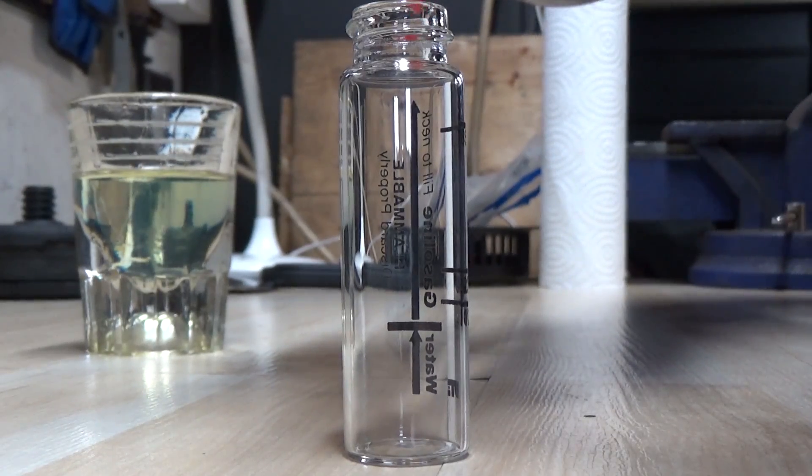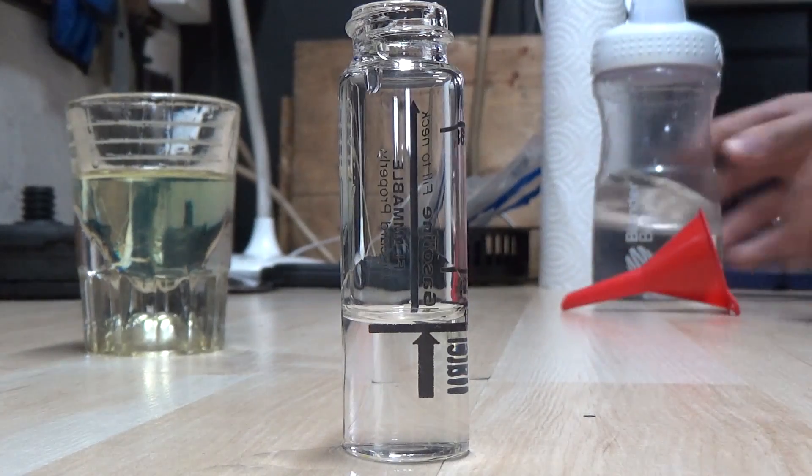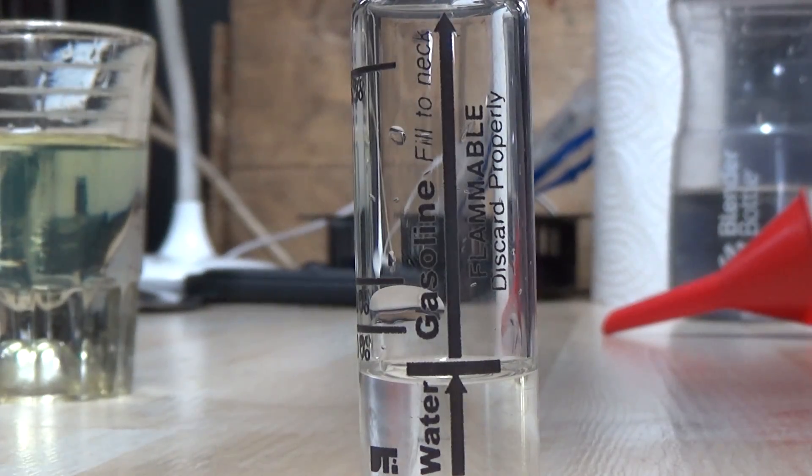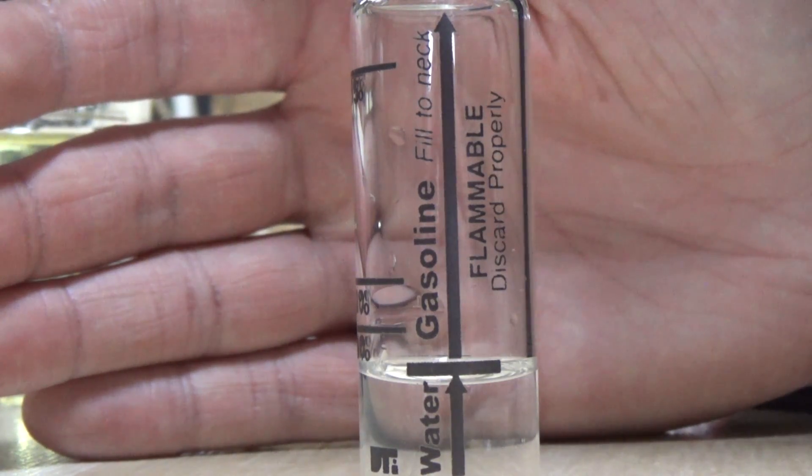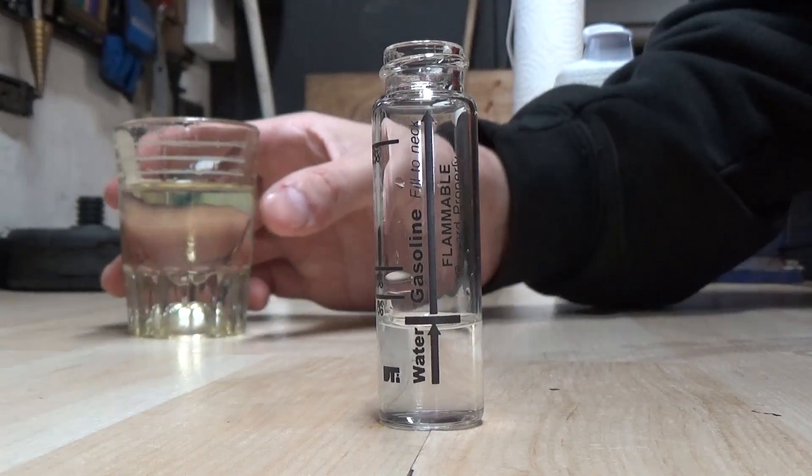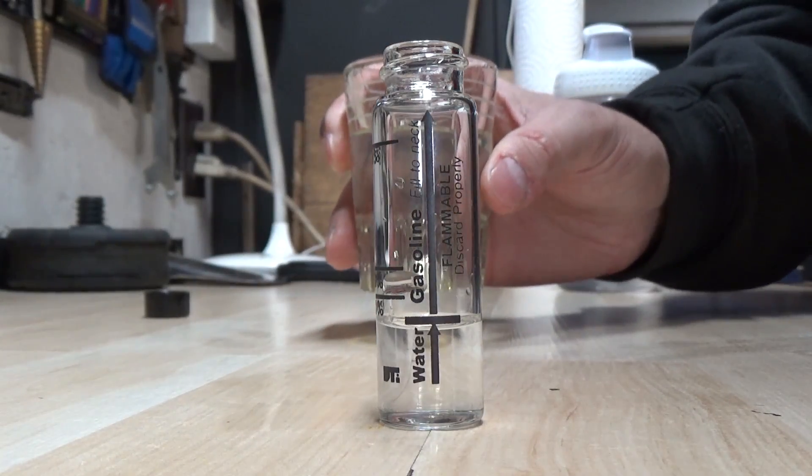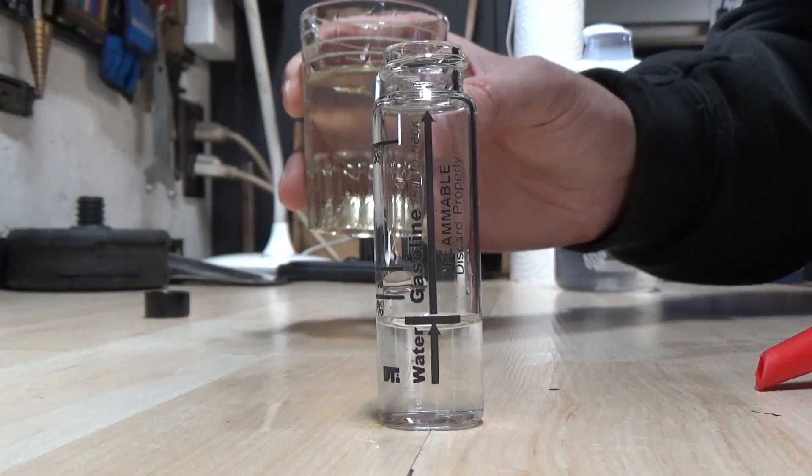So I'm going to come in here with my water and try to get it to the line there. Any extra I can drain out. Now because of the camera angle, it may look a little low, but we are actually right on the line. So now I'm going to take my little funnel here and my shot glass of 91 octane fuel, and I'm going to fill up the rest of the vial here.